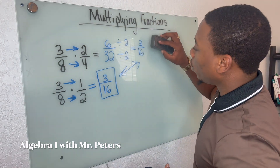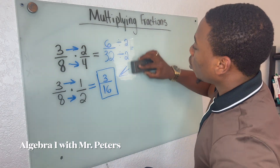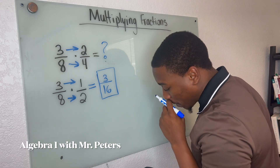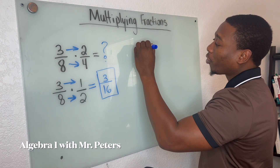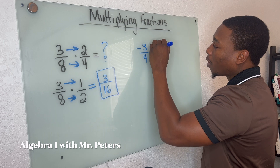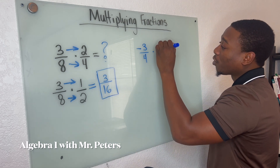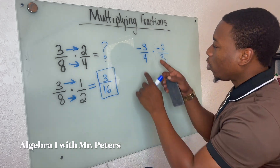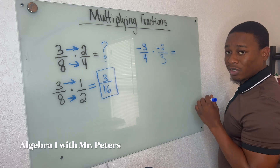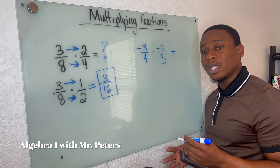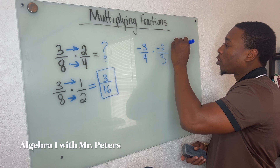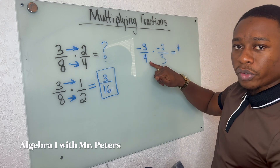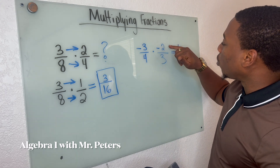Now we're going to go into one more problem. In our second problem, we're going to do the same exact steps. It tells us to take negative 3 over 4 and multiply this by negative 2 over 3. When we look at this problem, we notice that we're multiplying two negative fractions. Multiplying two negative fractions means that our product — what we get as an answer — is going to be a positive fraction. And I notice that we can't reduce 3 over 4, and we can't reduce 2 over 3.